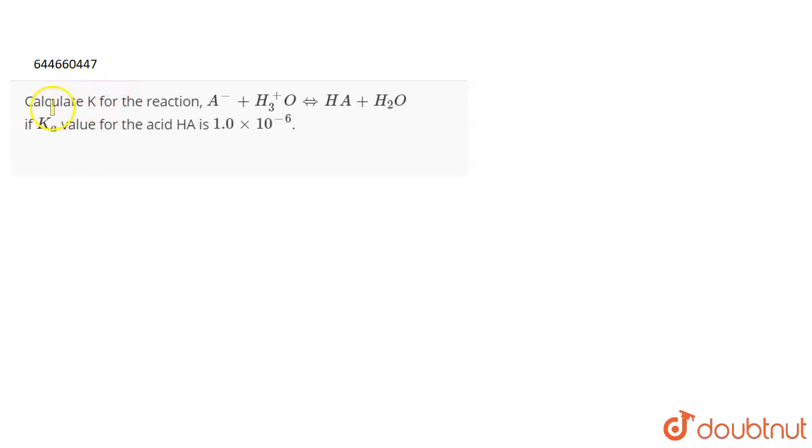The question is calculate K for the reaction A- plus H3O plus giving HA plus H2O. K means equilibrium constant only. You have to find out for the reaction given, and you're given that the Ka value for the acid HA is 1.0 × 10^-6.